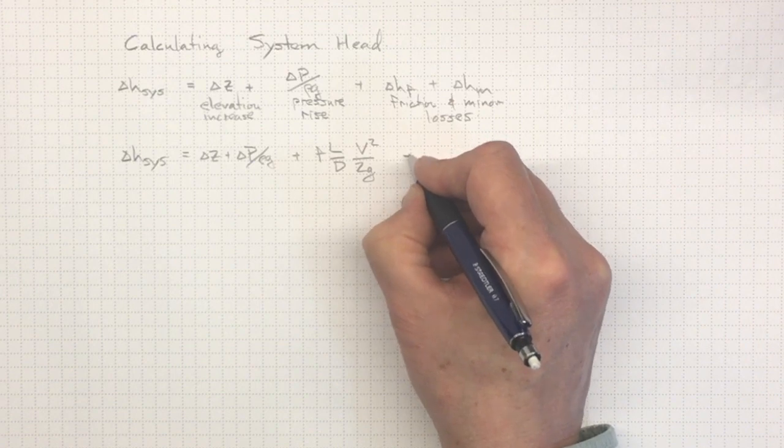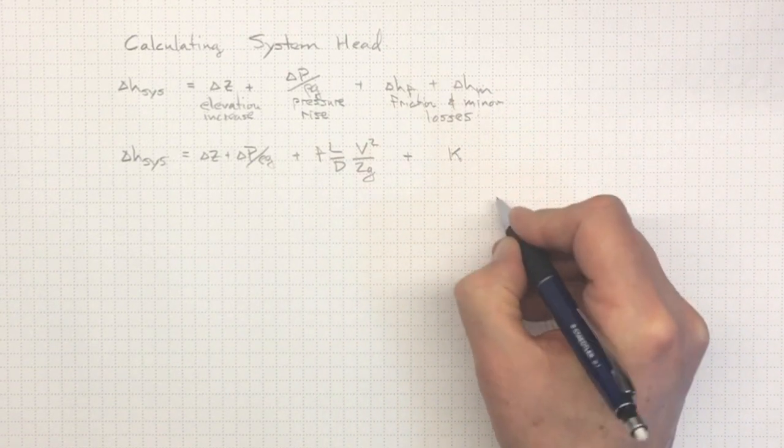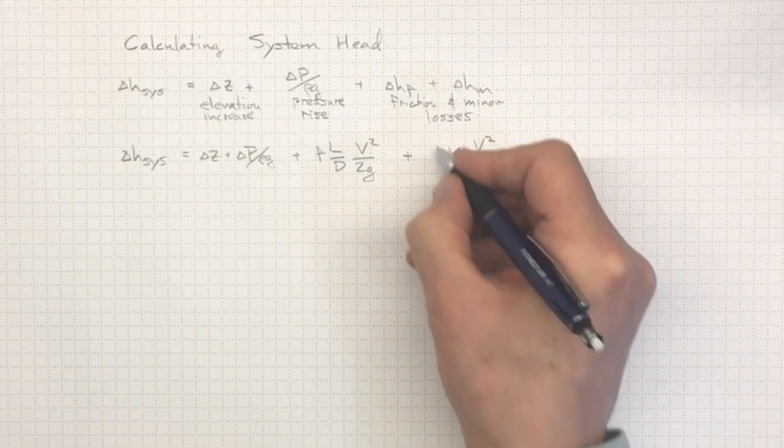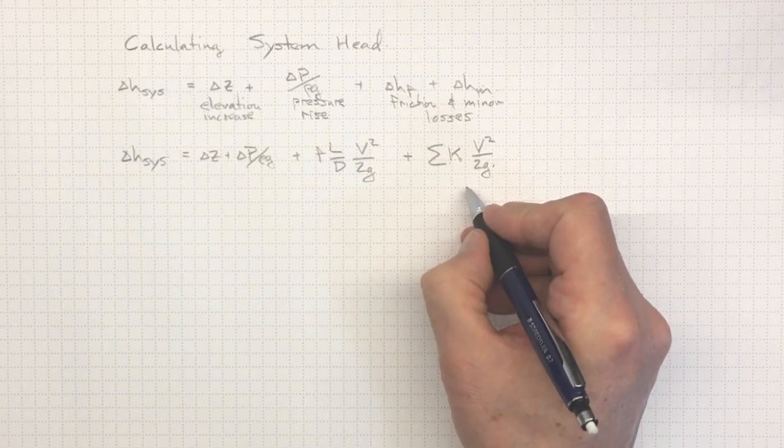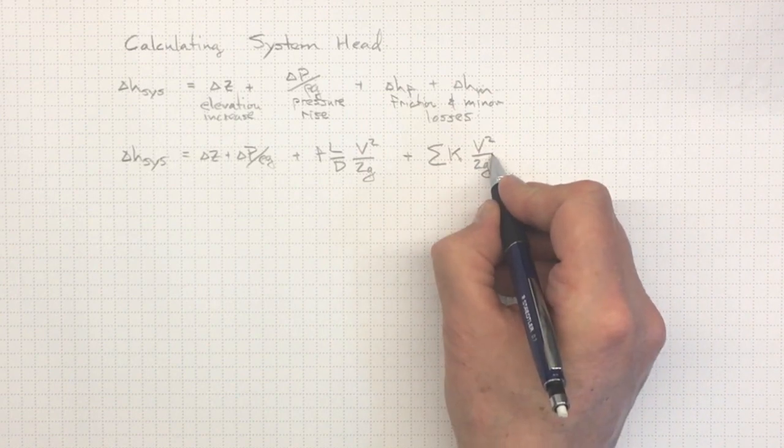And again from the previous section, the minor losses will depend on the K factors times V squared over 2G. And if we sum over all of the different minor loss coefficients in our system, then we'll have the sum of all the K factors times V squared over 2G.